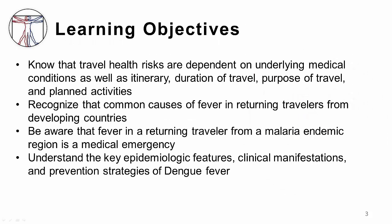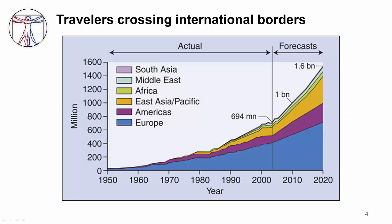The learning objectives here: we would like you to know that travel health risks are dependent on the underlying medical condition, as well as the itinerary, duration of travel, purpose of travel, and planned activities. You should recognize the common causes of fever in a returning traveler from developing countries, be aware that fever in a returning traveler from a malaria-endemic region is a medical emergency, and understand the key epidemiological features, clinical manifestations, and prevention strategies of dengue fever.